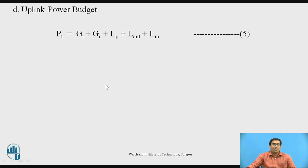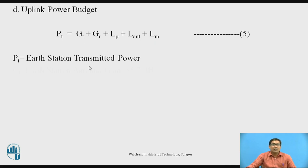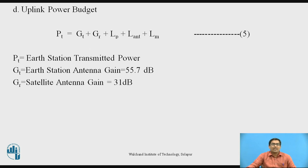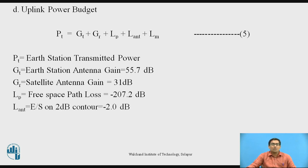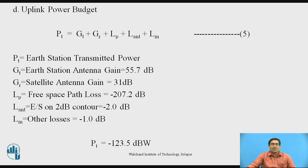Now the uplink power budget. The formula is: Pt = Gt + Gr + Lp + Lant + Lm (equation 5), where Pt is the earth station transmitted power to be calculated; Gt = 55.7 dB (earth station antenna gain); Gr = 31 dB (satellite antenna gain); Lp = −207.2 dB (free space path loss); Lant = −2 dB (E/S on-axis 2 dB contour); and Lm = −1 dB (other losses). After putting all values into equation 5, we get earth station transmitted power Pt = −123.5 dBW.